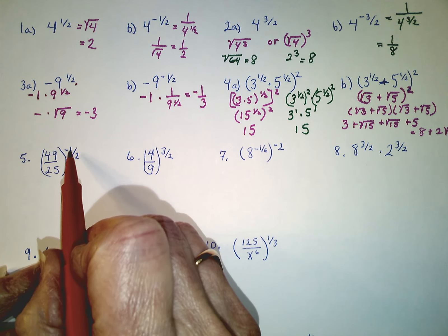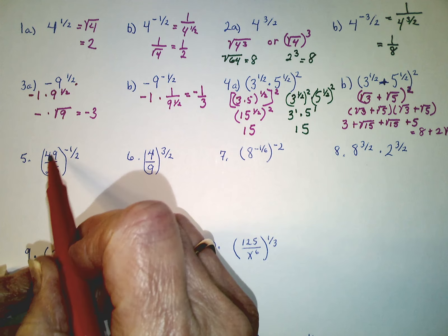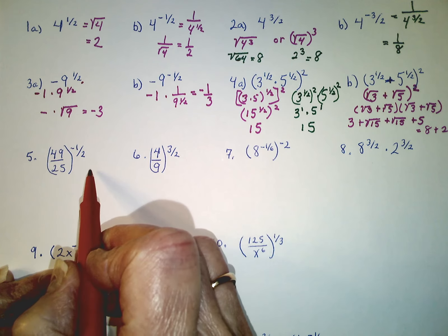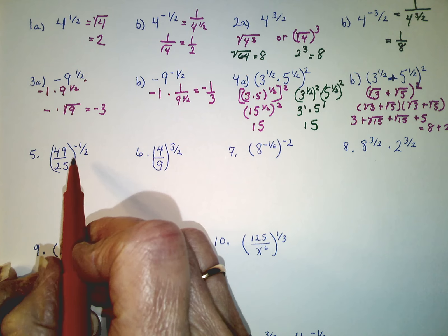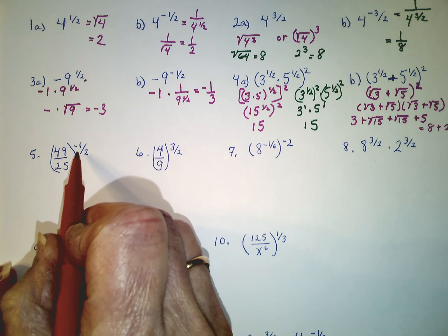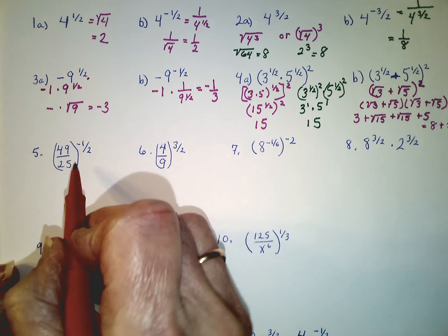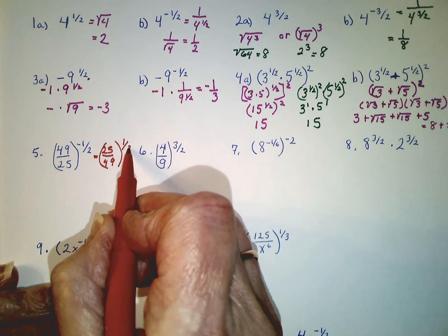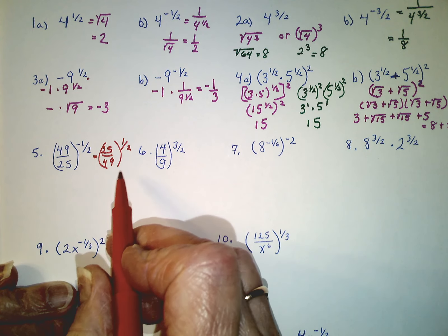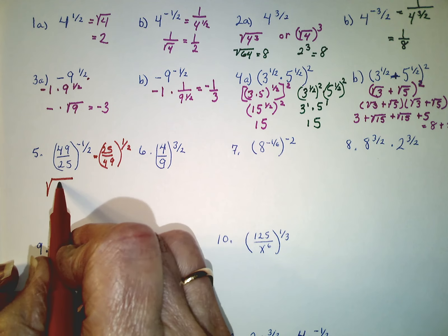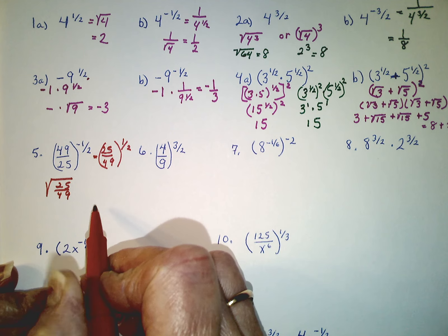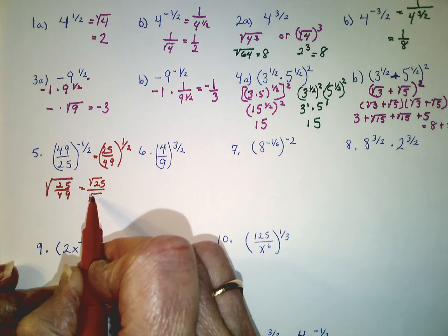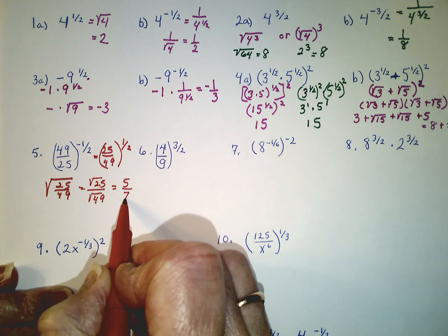One way of approaching these is: if you have a negative power, you get rid of that first by taking the reciprocal. If we take the reciprocal first, that would make this 25 over 49 to the positive one-half. Then we just take the square root of 25 over 49. We can take the square root of 25 and divide it by the square root of 49 — that's 5 sevenths.